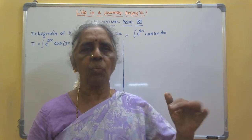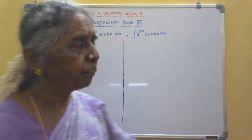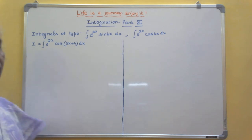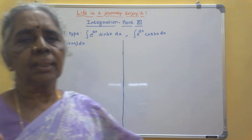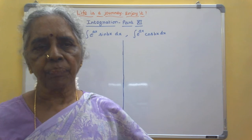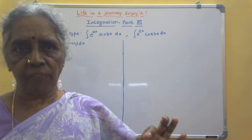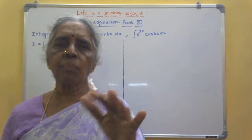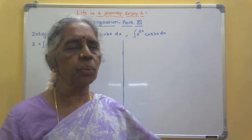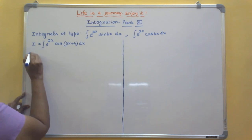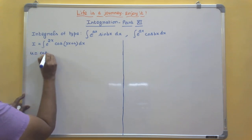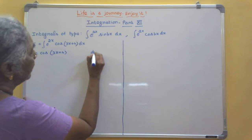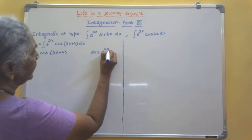But let us see what difference there is in this type of sum. So let us see one example. The sum I is equal to integral of e^(2x) cos(3x + 4) dx. This is a product of 2 different functions — exponential function and trigonometric function. T comes before E using the ILATE rule, so your u function will be cos(3x + 4) and dv will be e^(2x) dx.